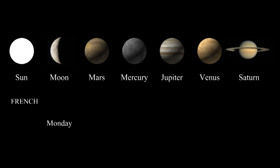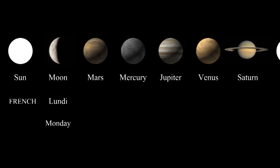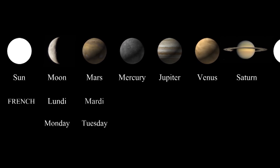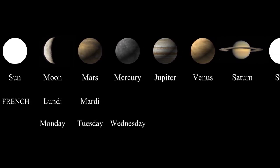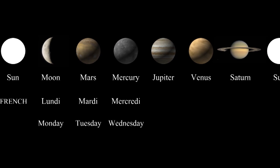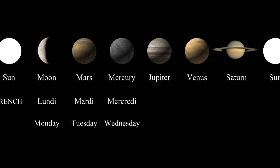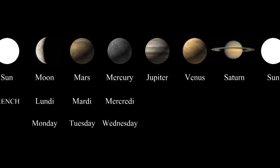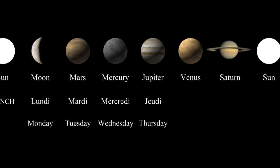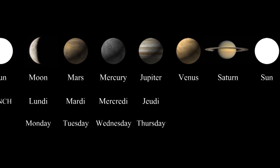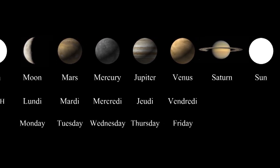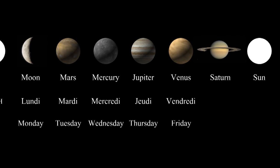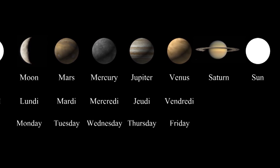Monday is Lundi — Lundi means Moon Day. Tuesday is Mardi — Mardi means Mars Day. Wednesday is Mercredi — Mercredi is for Mercury. Thursday is Jeudi — Jeudi means Jupiter's day. Friday is Vendredi — Vendredi means Venus's day.